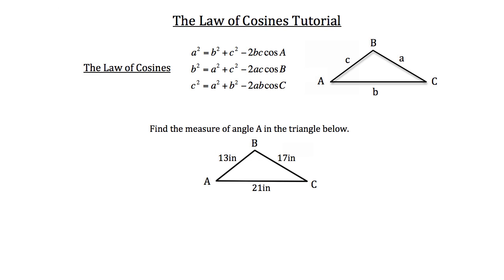Find the measure of angle A in the triangle below. We have the three side lengths of this triangle, so I can use that first formula to solve for angle A. This will be side length a because it's directly opposite angle A, this will be side length b, and this will be side length c. So side length a squared — 17 squared — is equal to side length b squared, which is 21 squared, plus side length c squared, which is 13 squared.